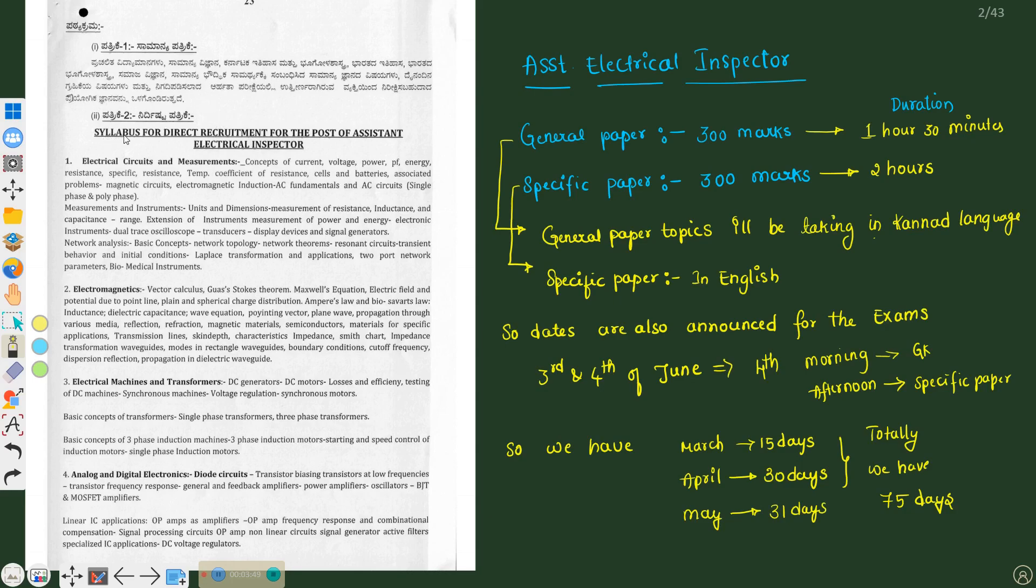If we talk about specific paper, that is electrical and electronic engineering, we have a subject called electrical circuits and measurements. This is one subject and this is another subject; they have merged as one. So we are seeing here concepts of current, voltage, power, power factor, energy, resistance, specific resistance, temperature coefficient of resistance. Likewise many concepts are there. We will start with very basic - even if you don't know about electrical engineering, then also you will get to know what is electrical engineering by watching my videos.